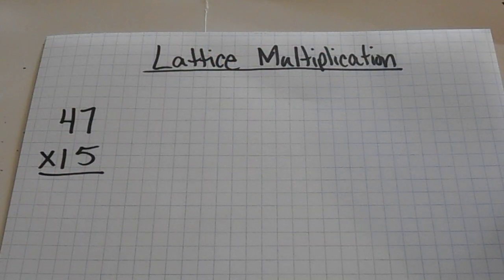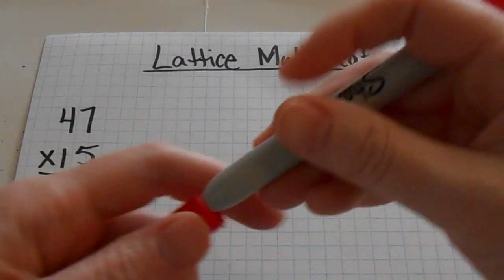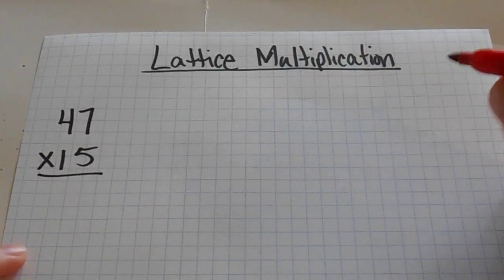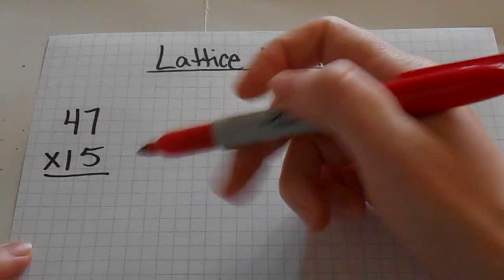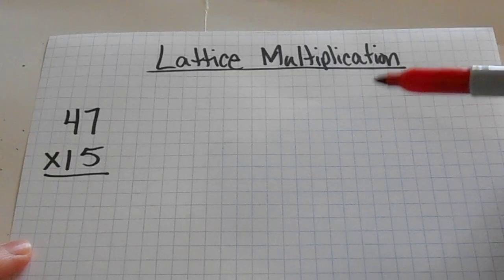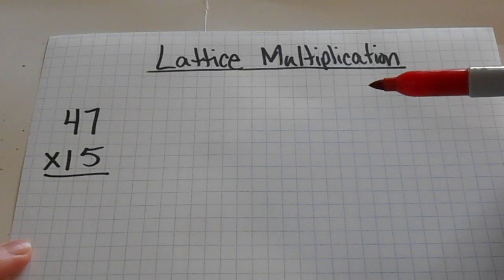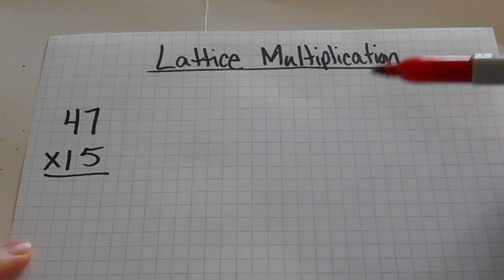Hi gang. We are going to learn about lattice multiplication today. So here is what a normal problem would look like. And lattice multiplication is good for multi-digit numbers being multiplied together.